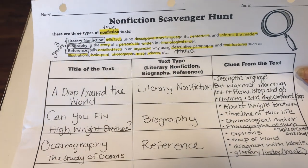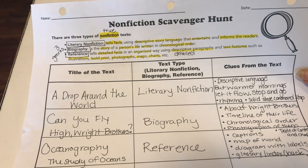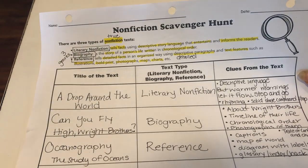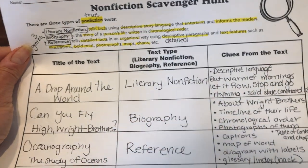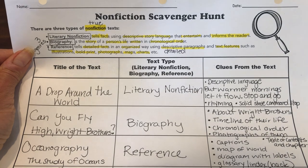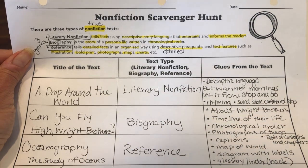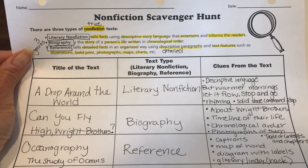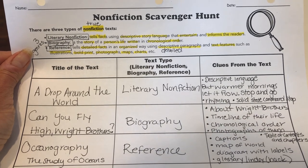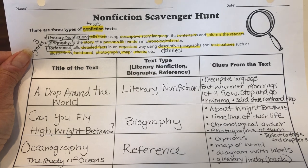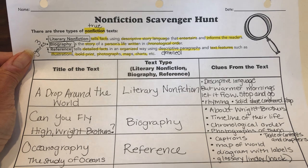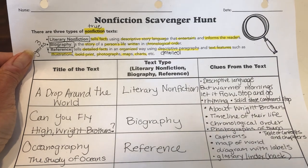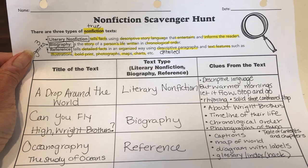And our last one was 'Oceanography: The Study of Oceans.' That is a reference text — it's informational, giving detailed facts about a specific topic, in this case the study of oceans. Some examples of why this is a reference text: there were captions, a map of the world, lots of labeled diagrams, a glossary, bold words, and an index — both found in the back of the book. There was a table of contents in the beginning, different chapters, illustrations, and photographs. So a lot of those text features were found in the oceanography book.